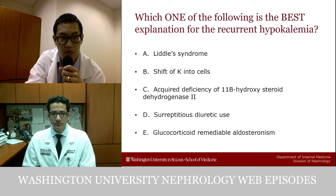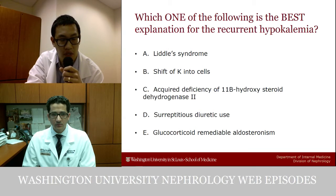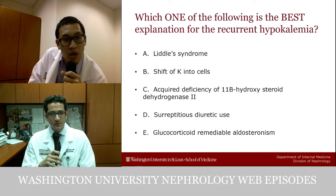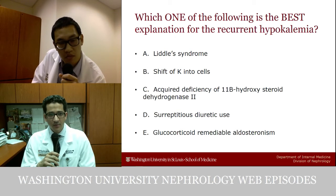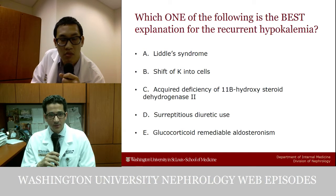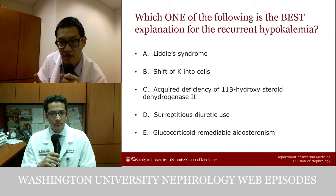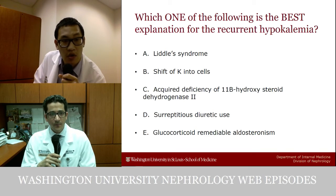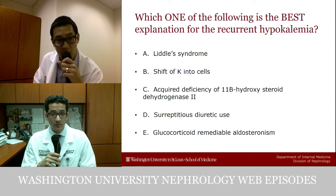Which of the following best explains the recurrent hypokalemia? Options: Liddle syndrome, intracellular potassium shift, acquired deficiency of 11-beta-hydroxysteroid dehydrogenase 2, surreptitious diuretic use, or glucocorticoid remediable aldosteronism. Liddle syndrome is a defect in the ENaC channel typically affecting younger individuals that doesn't resolve and recur — the intermittent, sporadic nature argues against it, even though it would present with hypokalemia, hypertension, and alkalosis.